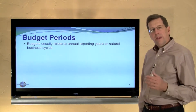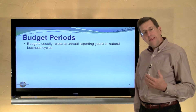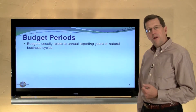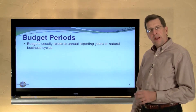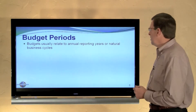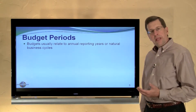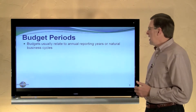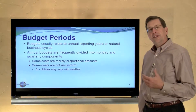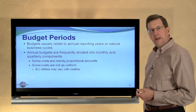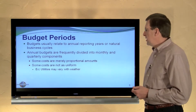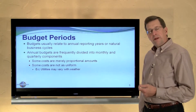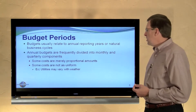In the illustrations we've looked at in this chapter, we assumed an annual reporting period. We had broken the budgets down by quarters, but the master budget covered a period of one year. Budgets typically relate to a year or a natural business cycle, but they can be further divided into monthly or quarterly components, as we did in our budget.